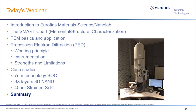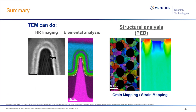In summary, TEM can do many great things. It is a great imaging tool providing sub-angstrom resolution, enabling chemical analysis at the nanometer scale using EDS and EELS, and structural analysis using PED for grain orientation mapping and strain mapping at nanometer resolution. Finally, I would like to thank everyone who supported this work — team NanoLab — and our collaborators and the Nanomegas team for their support.